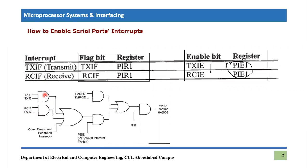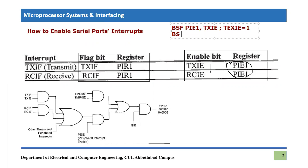These gates should be enabled if TXIF or RCIF is to provide an interrupt to the microcontroller. To make those enables one, you need to set the TXIE and RCIE bits. The instruction is: BSF PIE1, TXIE — this makes TXIE equal to one. Similarly, BSF PIE1, RCIE makes RCIE equal to one.